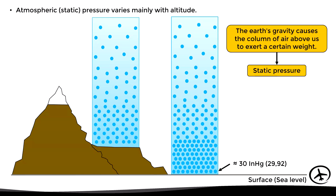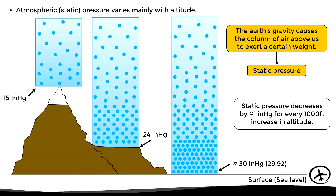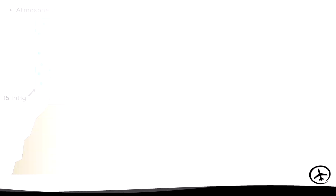In this example, partway up the mountain we measure a pressure of 24 inches of mercury, which is obviously less than the pressure at sea level. As we continue climbing, the static pressure decreases further — at the top we can measure a pressure of 15 inches of mercury, simply because we have less air above us. In general terms, the static pressure is reduced by one inch of mercury for every 1,000 feet of altitude increase, which means an aircraft flying at low altitudes will experience a higher static pressure than one flying higher.